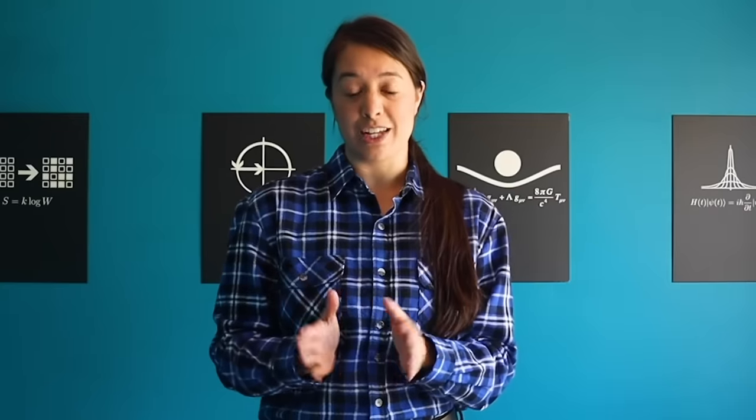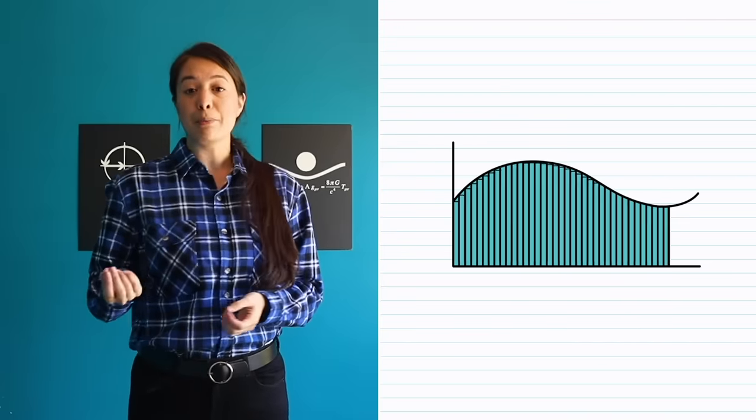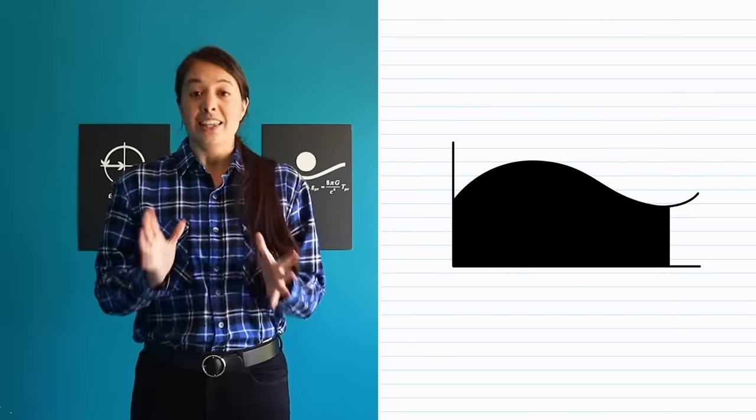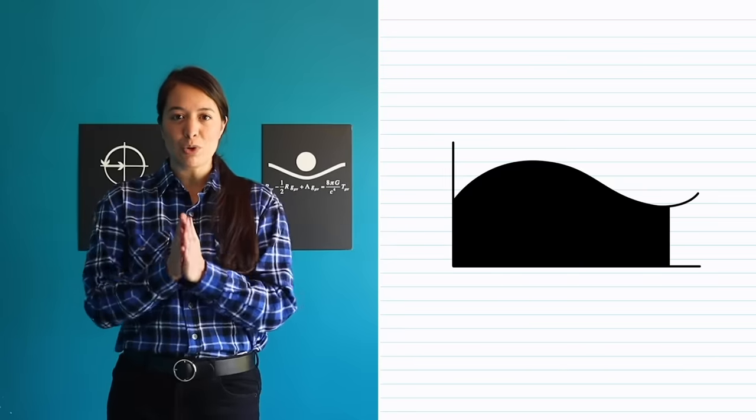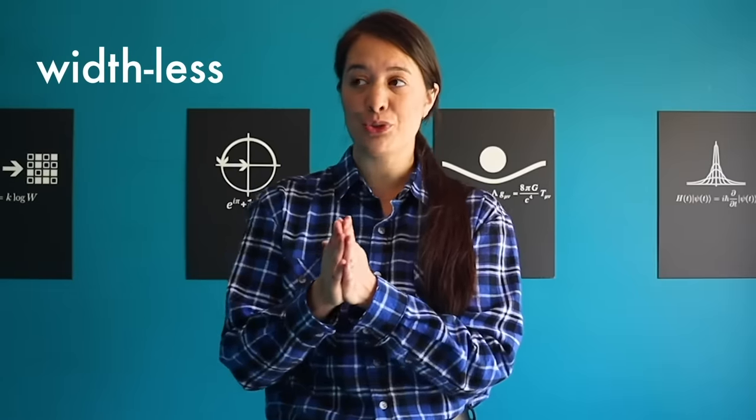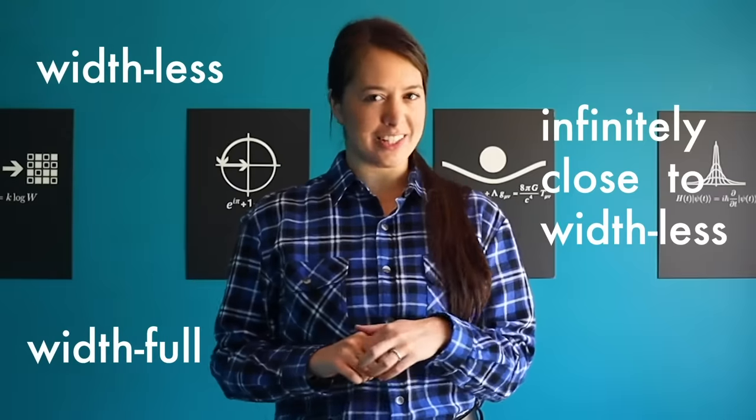Instead of letting the width of the rectangles equal zero, we ask what happens when we let the width approach zero? As the width of the rectangles approaches zero, the number of rectangles needed to fill the space approaches infinity. This technique is called integration because we're combining lots and lots of small things to create a larger whole. So here we've come full circle from widthless lines to width full lines to infinitely close to being widthless lines.